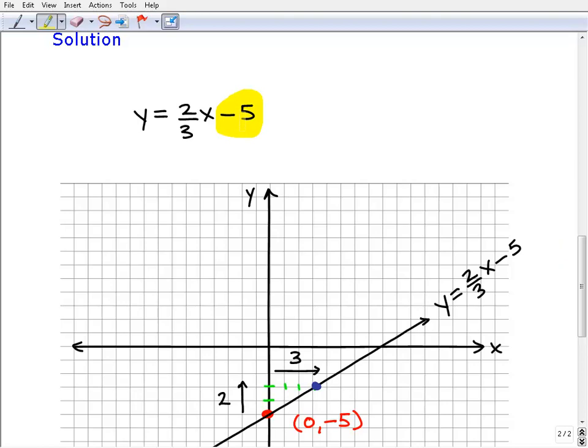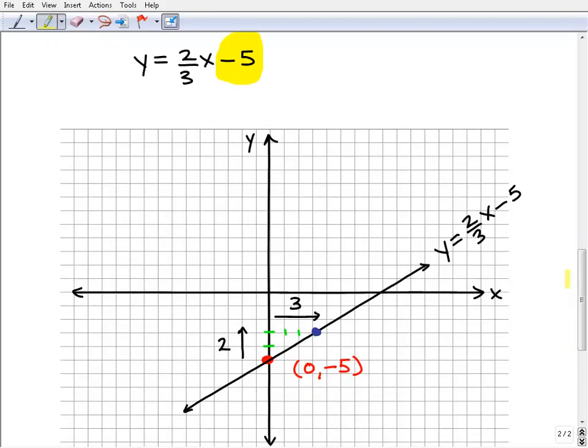and we go ahead and plot that on the y-axis because that's our first point. Remember, it takes two points to be able to draw a line. So our first point is really easy, it's this point right there. So it's negative 5 and you can see negative 5 on the y-axis is right here. The actual coordinate is 0, negative 5. So that's our first point.